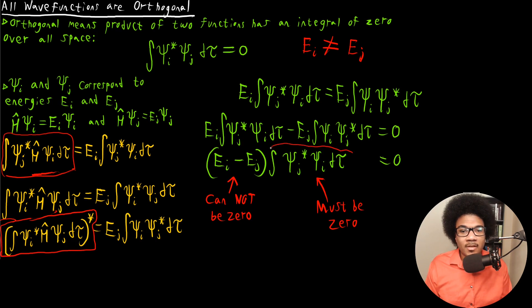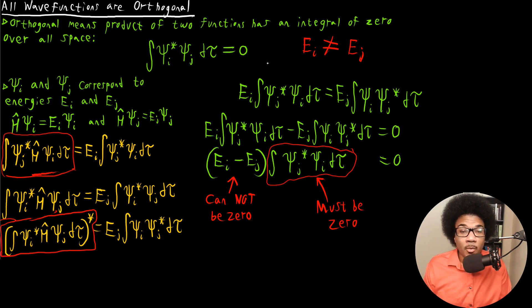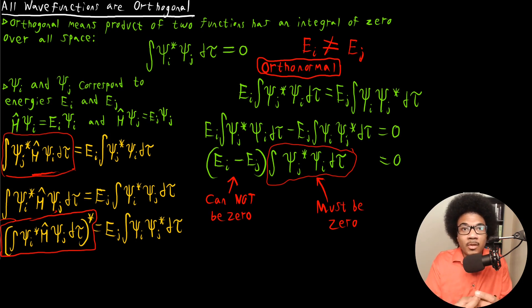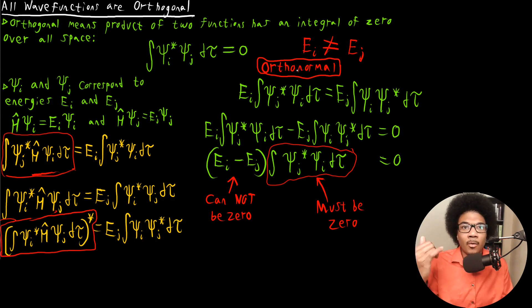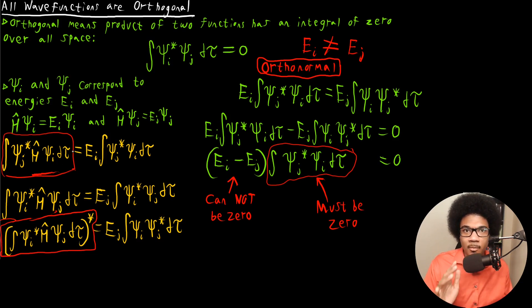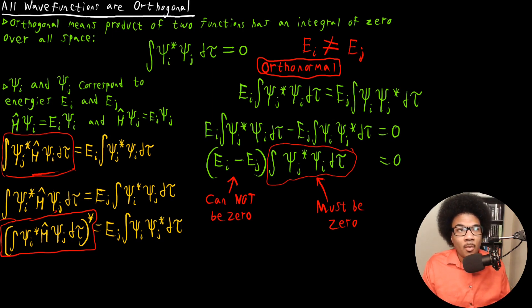That proves the orthogonality property. I want to introduce a term I'll use going forward: orthonormal. This refers to any set of wave functions that are both orthogonal and normalized — not only normalized, but also constituting a mutually orthogonal set. So after you normalize a set of wave functions, they are orthonormal. This is a very foundational property of quantum mechanical wave functions, a direct consequence of the Hermitian property of operators.